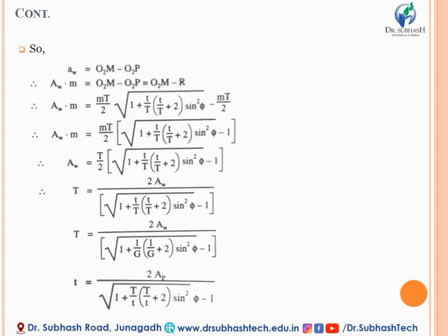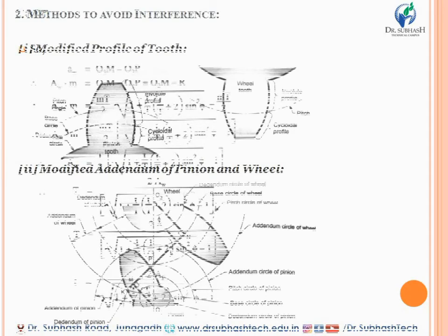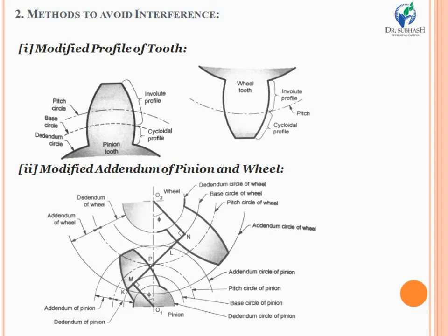Similarly, to find the minimum number of teeth required on the pinion to avoid interference, we adopt the same procedure as for the gear wheel. The resulting relation is: t = 2·a_p / [√(1 + G(G + 2)sin²φ) − 1]. This relation gives the minimum number of teeth for either the pinion or the gear wheel, ensuring removal or total avoidance of interference.